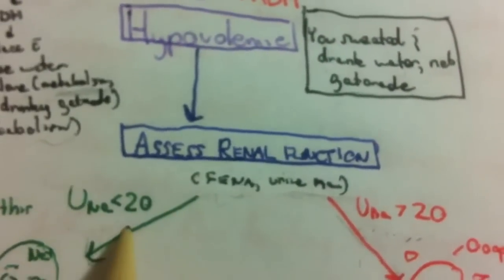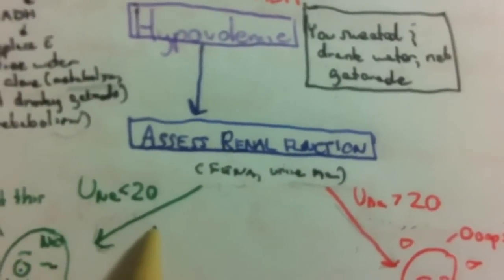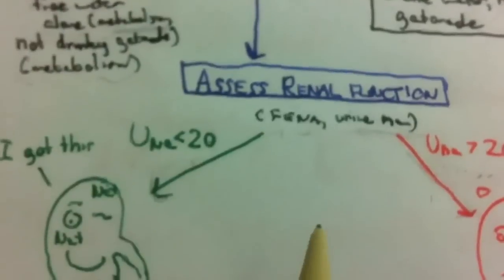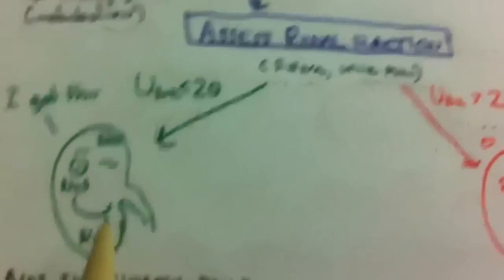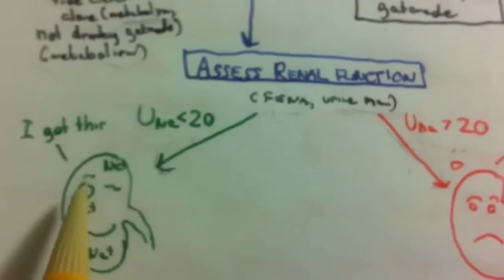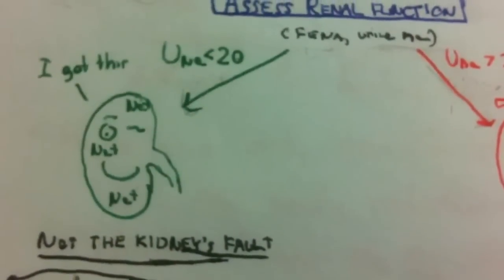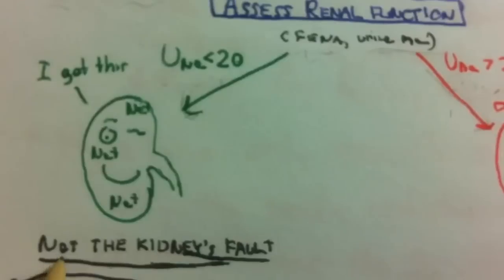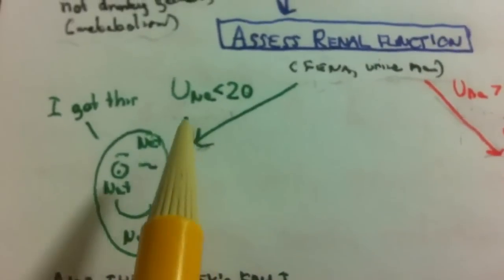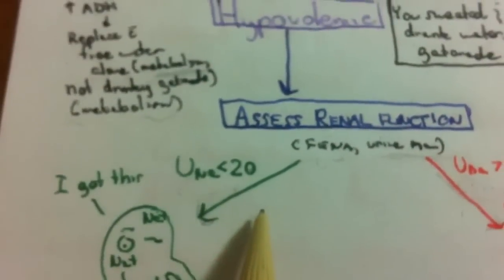If the urine sodium is less than 20, this is good — this is what the kidney is supposed to do. If you're hyponatremic, your kidney should be hanging on to sodium. So the hyponatremia in this case is not the kidney's fault; the kidney is doing what it's supposed to in the face of hyponatremia.